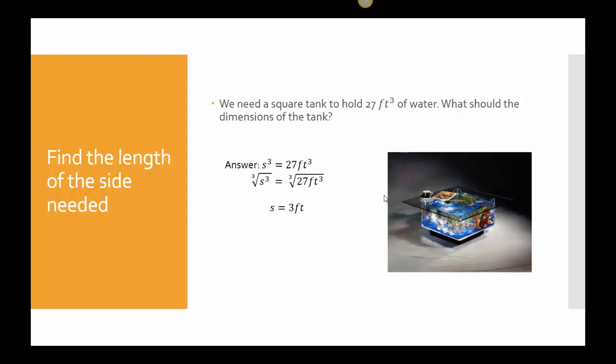Let's look at this. We need a square tank to hold 27 cubic feet of water. What should the dimensions of the tank be? This time, I know what the volume is. The volume is supposed to be 27 cubic feet. I know the formula for volume is s cubed if I'm trying to make a cubicle tank. So I would take the cube root of 27, which would be 3.